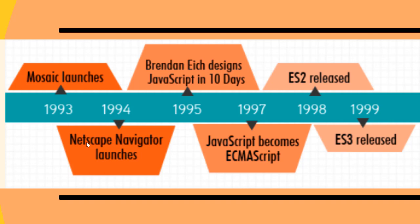Though Microsoft came up with JScript in 1996 to fight back JavaScript, that attempt failed. To maintain consistency across browsers, Netscape asked ECMA — the European Computer Manufacturers Association, an international standards organization — to codify the language. In 1997, ECMA standardized the language as ECMAScript. Then in 1998, ECMAScript 2 was released, and later in 1999 ECMAScript 3 was released, bringing a number of features to the language.